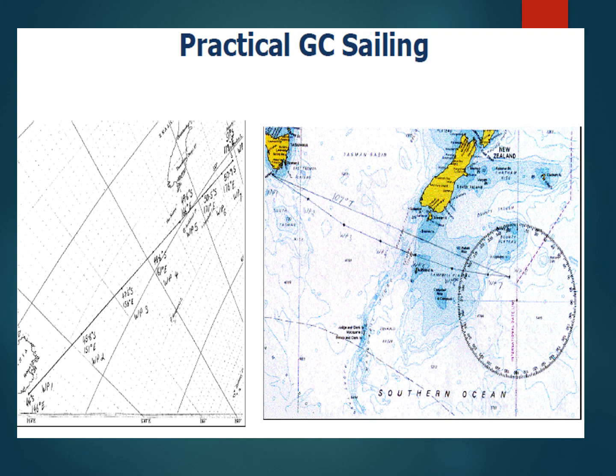Because you cannot use a gnomonic chart for navigation, what we normally do is first plot the great circle course on the gnomonic chart between the point of departure and the destination. Then on the great circle course, we mark waypoints at every five degrees of longitude. We note down those waypoint coordinates — as you see on the left side of your screen, waypoints noted at every five-degree longitude interval. Then we use those waypoints and plot them on the Mercator chart, as shown on the right side of the screen.